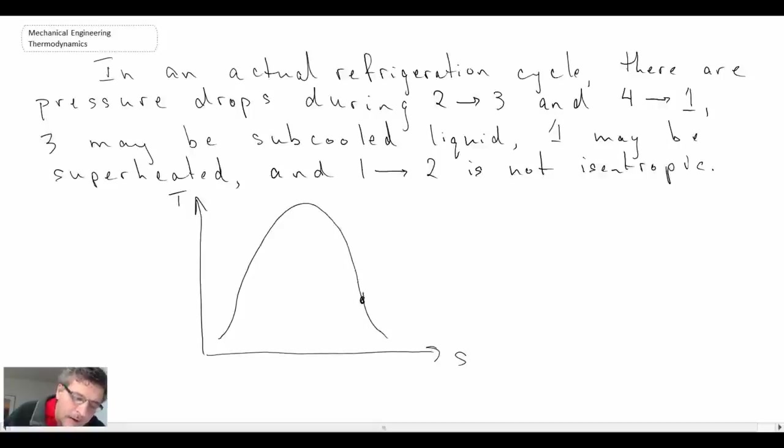We start at saturated vapor line, that's state one, going to the compressor, then we come back to the liquid region going to the throttling valve, taking us to four. That is the representation that we have for an ideal cycle. Now in reality, you're going to have pressure drops going from two to three and from four to one. The pressure will drop there, and that may take us into a subcooled liquid region for state three and superheated for state one.